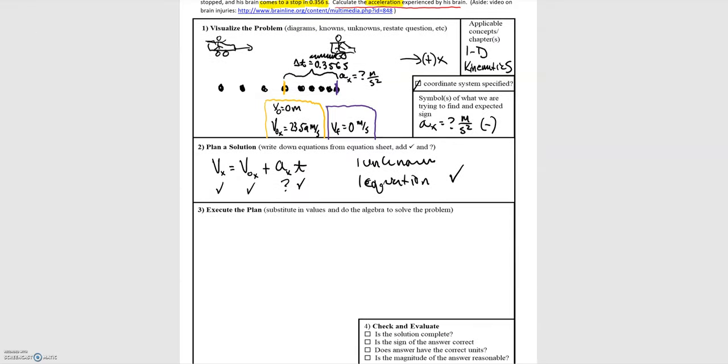On the hard part, all we need to do is just execute our plan. So starting from our equation that we put into two, we have the final velocity is equal to the initial velocity plus the acceleration multiplied by time. Substituting what we know and don't know in, the final velocity is equal to zero meters per second. The initial velocity was 23.59 meters per second. We are looking for acceleration, and all of this is happening over the time interval of 0.356 seconds.